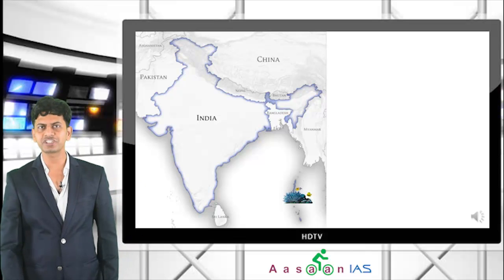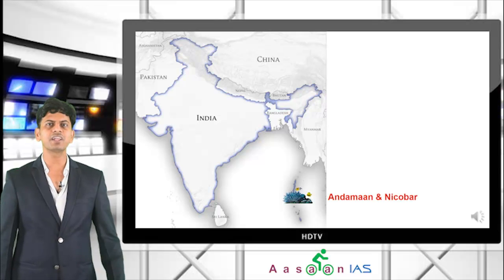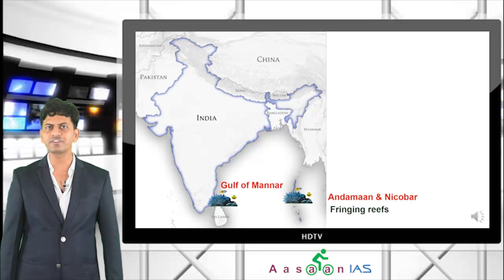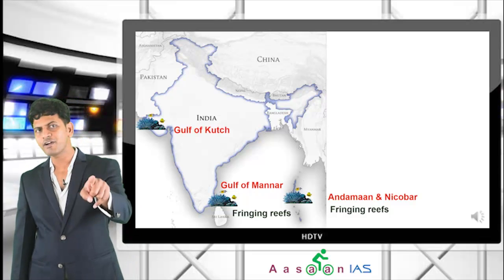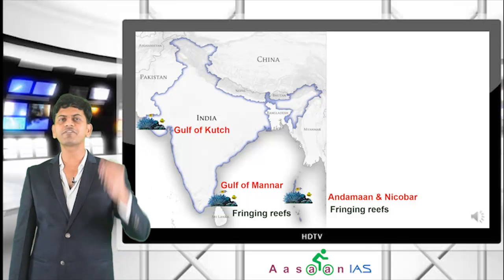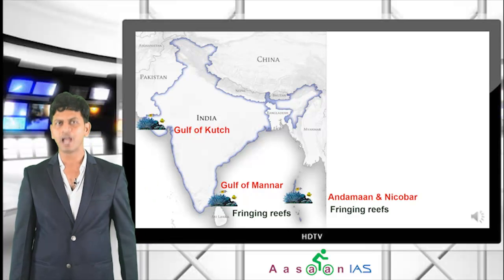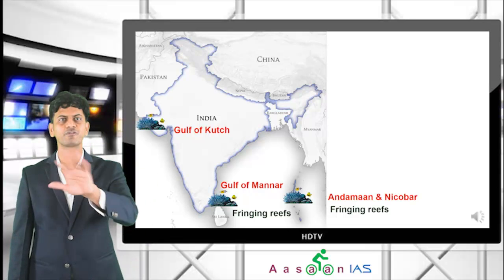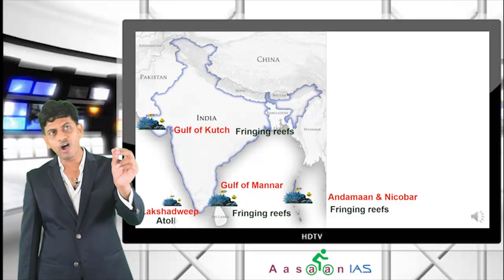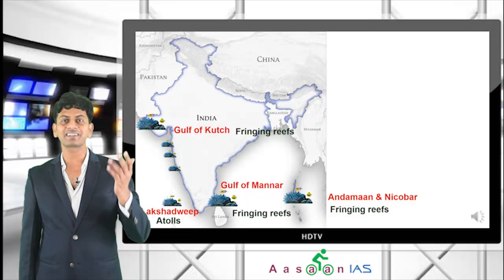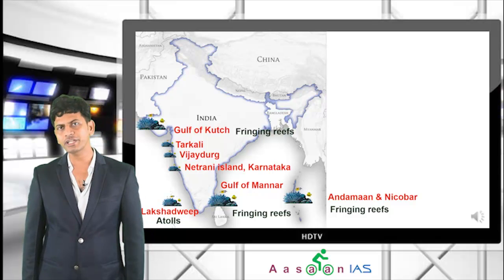Key coral reefs in India: Andaman and Nicobar — fringing reefs; Gulf of Mannar — fringing reefs; Gulf of Kachchh — fringing reefs. Both Gulf of Mannar and Gulf of Kachchh have corals and mangroves. Andaman also has mangroves. Lakshadweep reefs are atolls. Small coral reefs exist at Tarkarli and Vijaydurg in Maharashtra and Netrani in Karnataka.